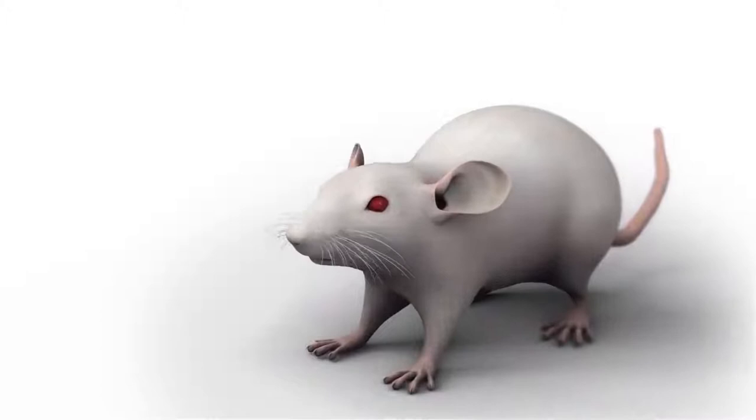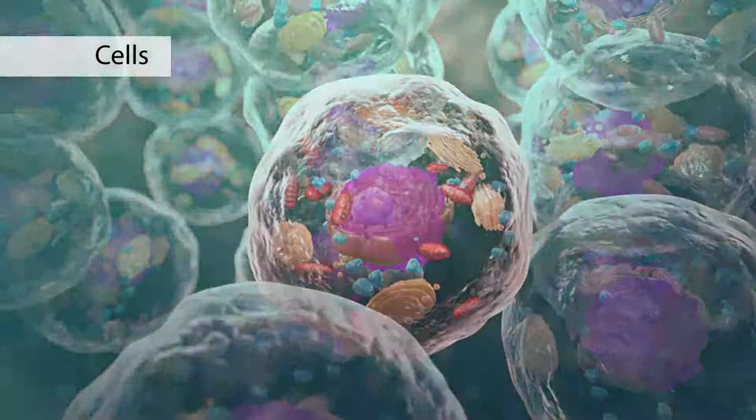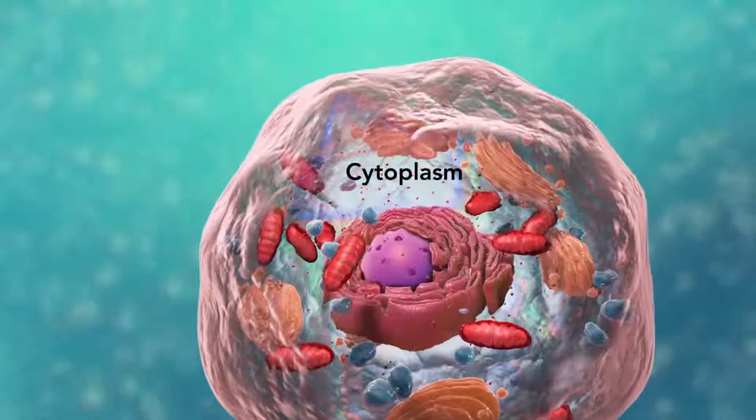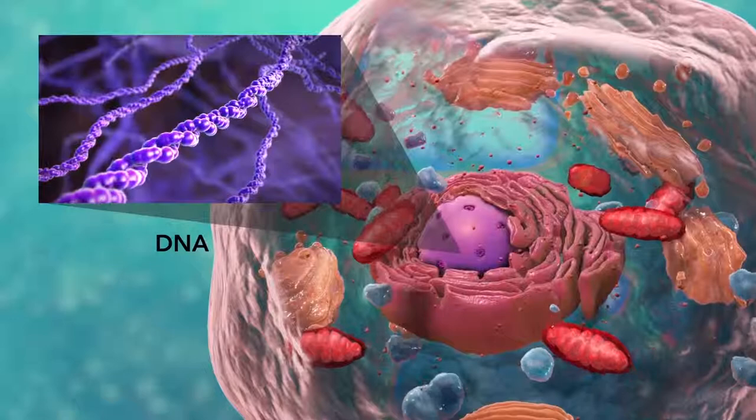Cells are the smallest living units of an organism. All cells have three things in common no matter what type of cell they are. All cells have a cell membrane which separates the inside of the cell from its environment, cytoplasm which is a jelly-like fluid, and DNA which is the cell's genetic material.